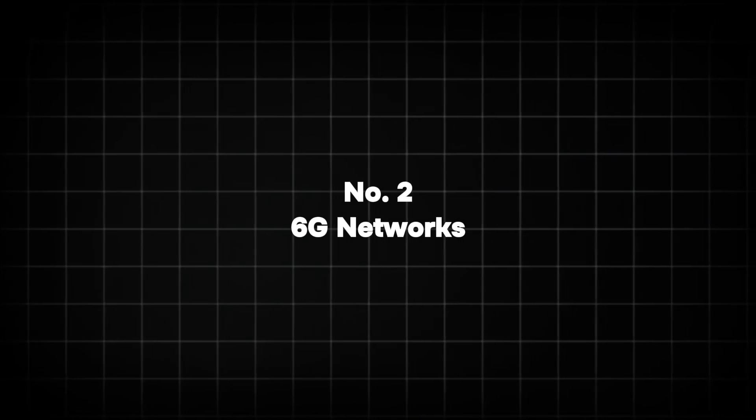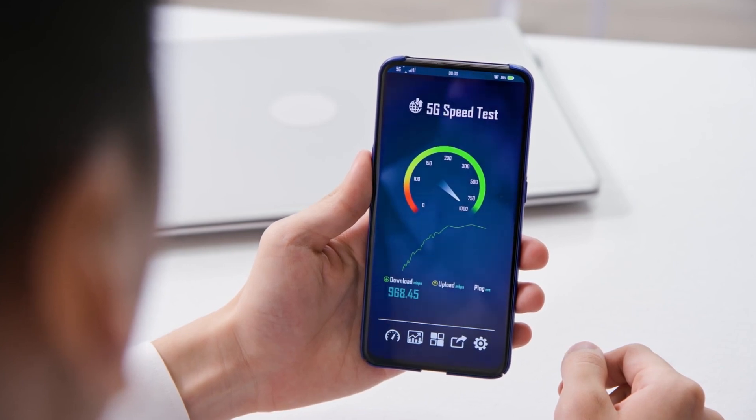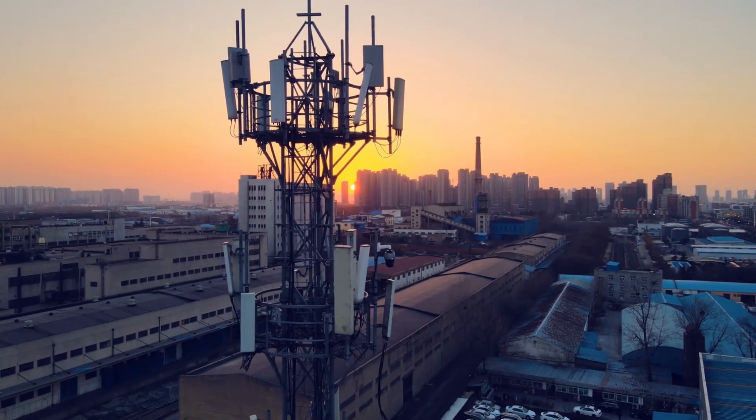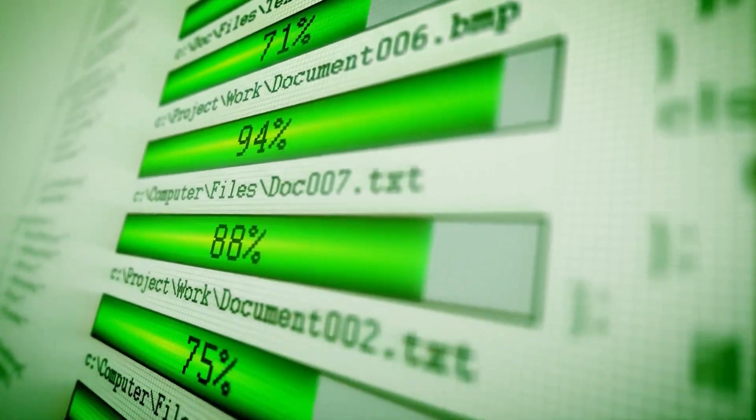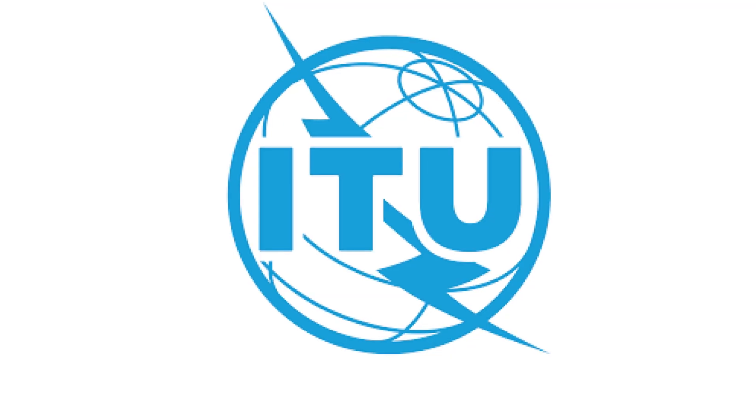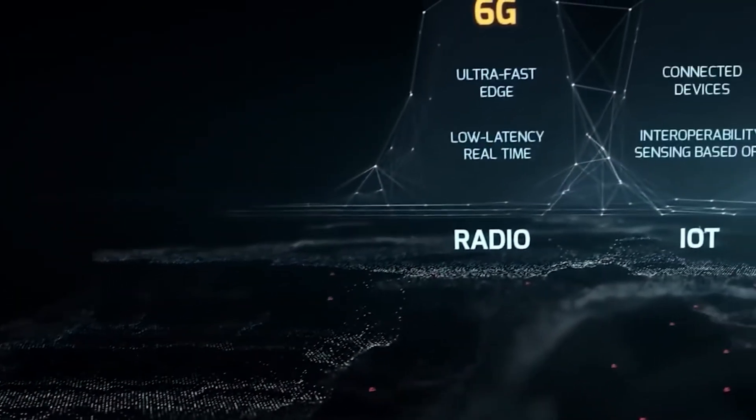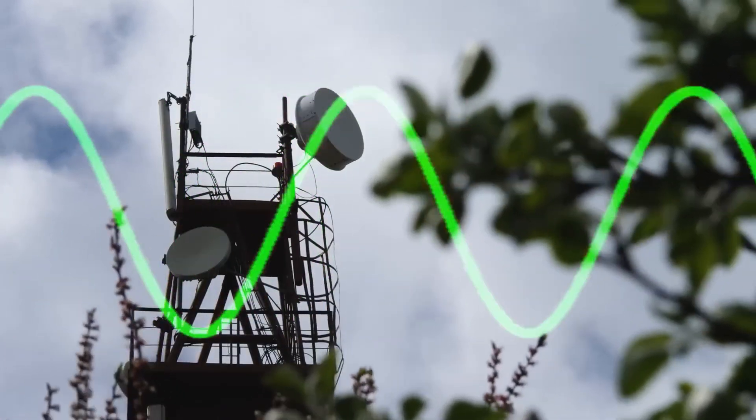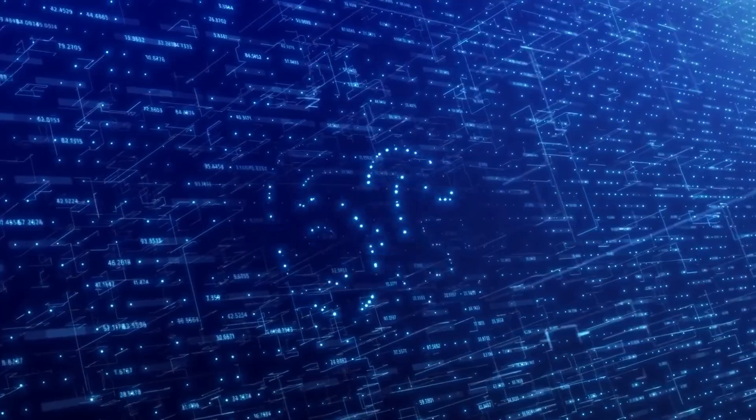Number 2. 6G networks. Most of us are still figuring out what 5G even means for our phones. But guess what? 6G is already in the works. It's expected to hit the market around 2029 to 2030, and it's not just about downloading movies faster. The International Telecommunication Union, or ITU, has this grand vision they're calling the Intelligent Network of Everything. Let me explain. 6G will use these super high radio frequencies with way more capacity, and, get this, latency that's a thousand times faster than what we have now.